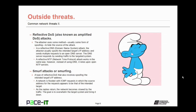There's also the reflective denial of service attack, also known as an amplified DDoS. The attacker uses some method, usually some form of spoofing, to hide the source of the attack. In a reflective DNS attack, the attacker usually spoofs the intended target's IP address and sends multiple requests to an open DNS server. The DNS server responds by sending traffic back to the targeted system, overwhelming it. A cousin to this is the reflective NTP attack, or reflective network time protocol attack, which works the same way but relies upon open NTP servers instead.